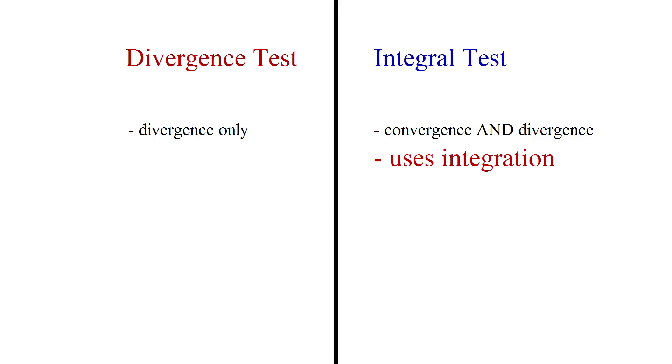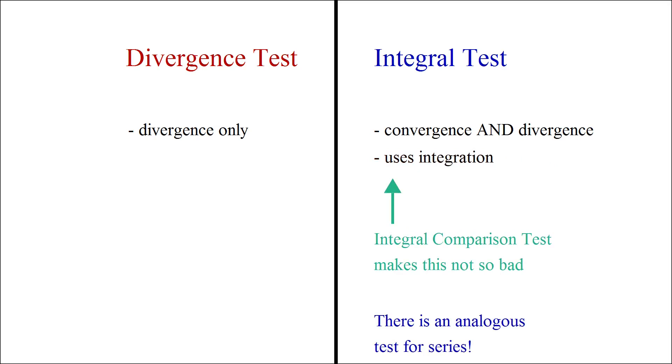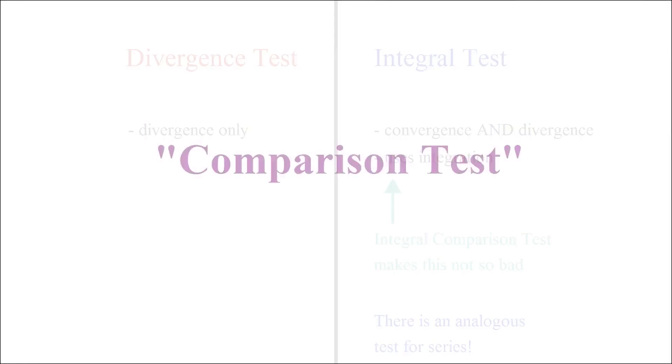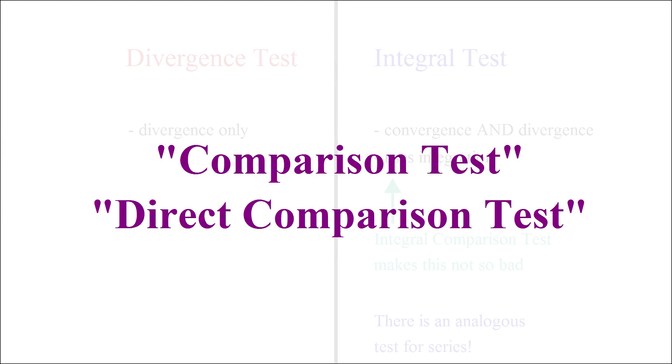But if you remember from when we were talking about improper integrals, we had a trick to get around this, provided we're only interested in determining convergence versus divergence of an improper integral and we don't care about the precise value of the integral. That trick was the integral comparison test and there is an analogous test for series. It's called the comparison test or the direct comparison test.